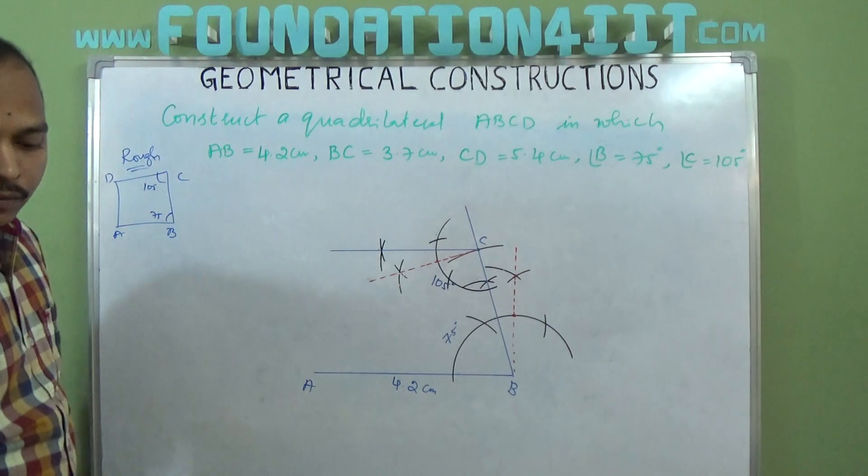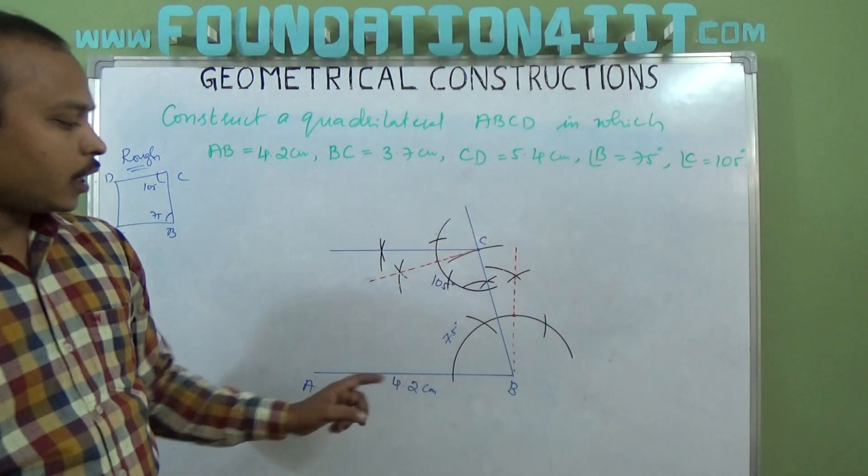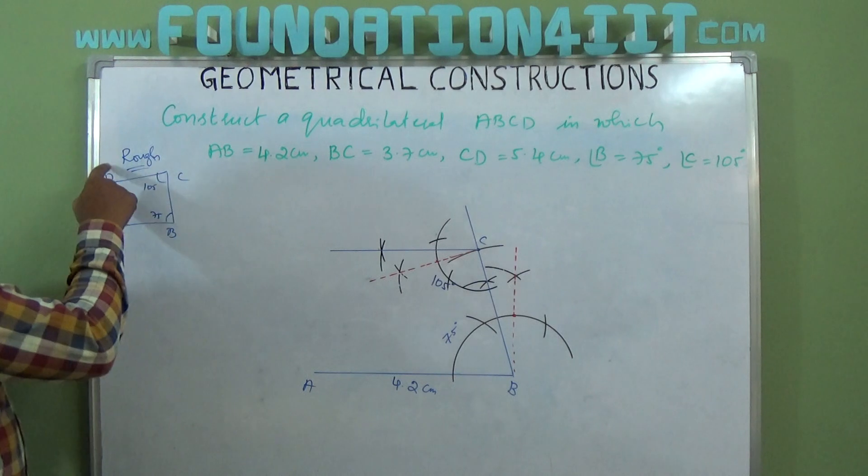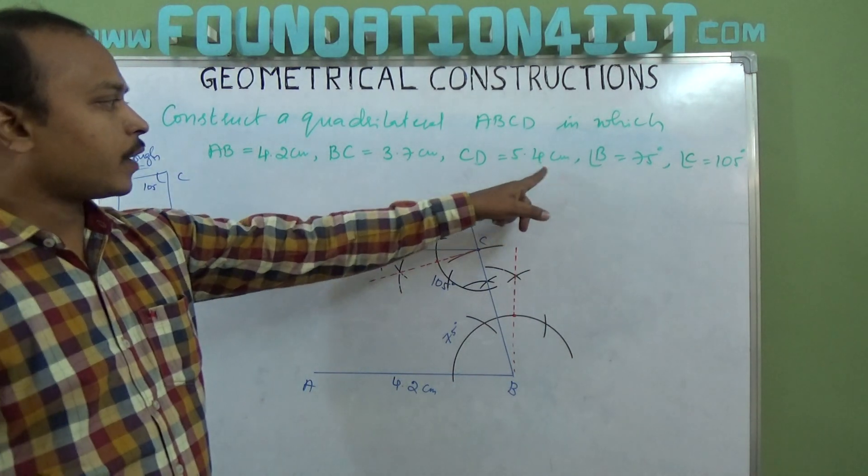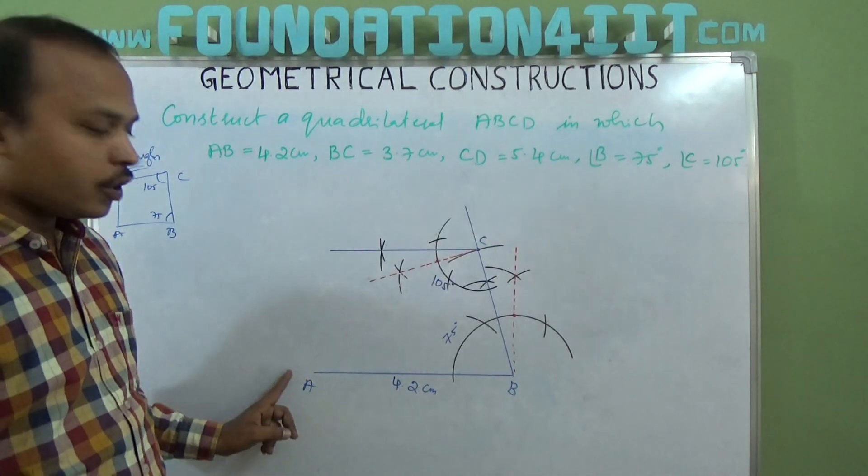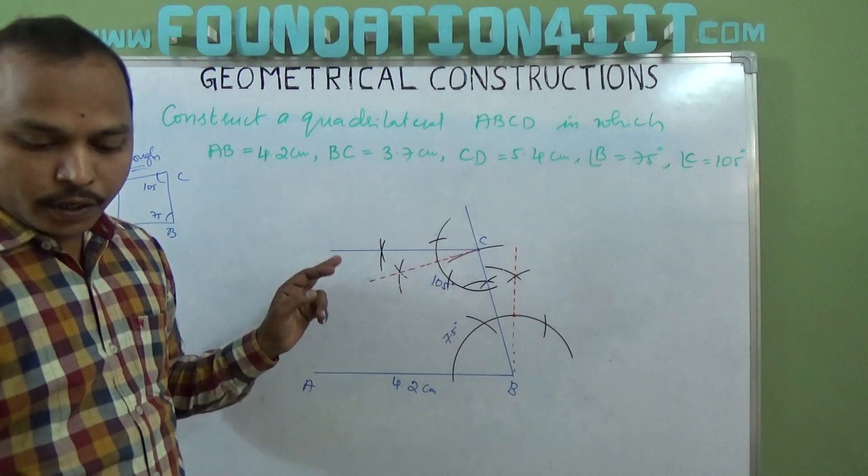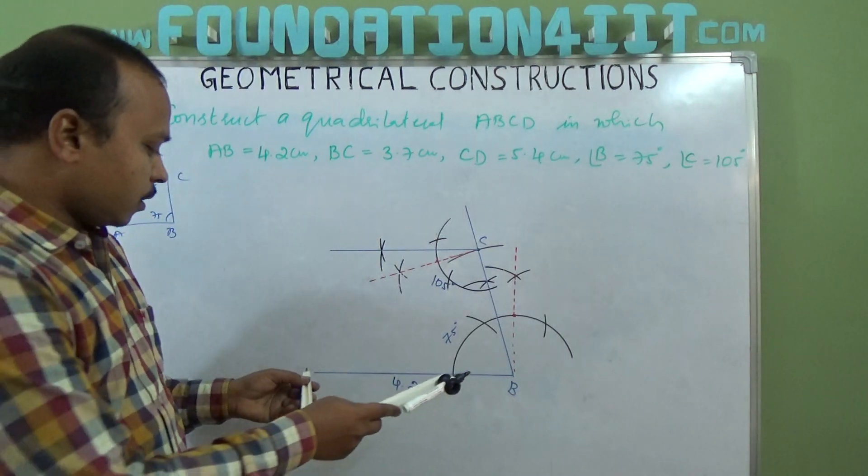Now observe here, we got ABC. Next is D. Now C to D and A to D distances. C to D is 5.4 centimeters, which we got here.